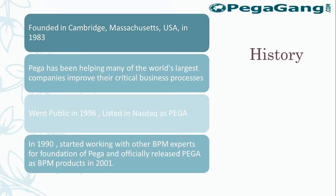Before going further, we should know a little history about Pega. Pega started in 1983 as a middleware company — they didn't start as a BPM company. Initially they helped big players with middleware, message transmission, and related work. In 1990 they formed a team of BPM experts as the foundation of Pega, and in 1996 they went public, registering on Nasdaq. In 2001 they officially released Pega as a BPM product.